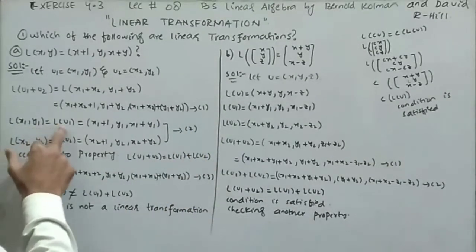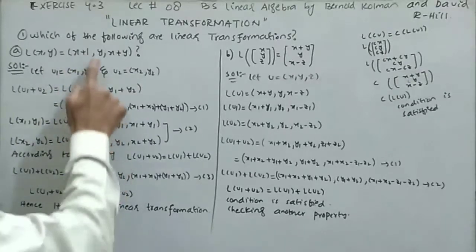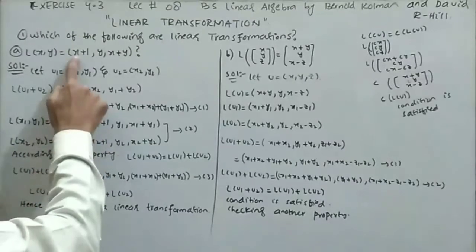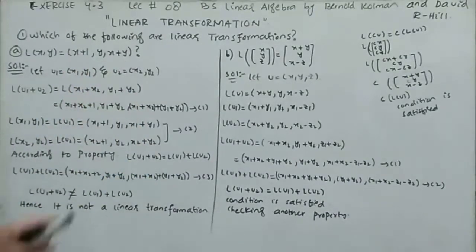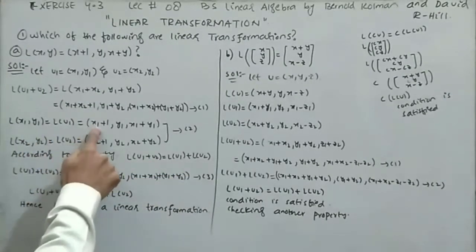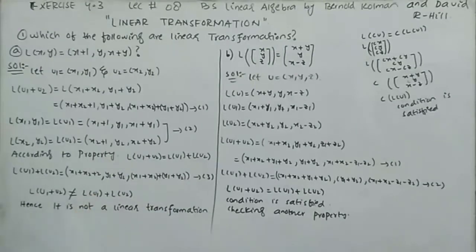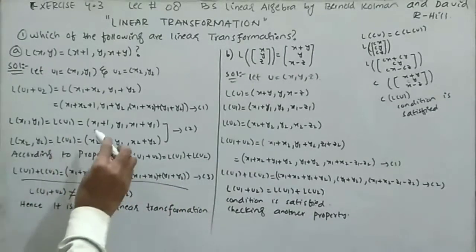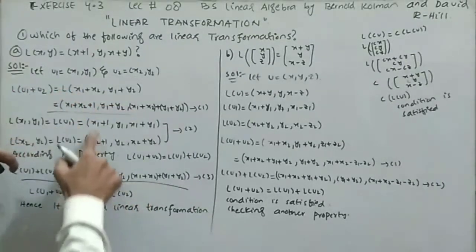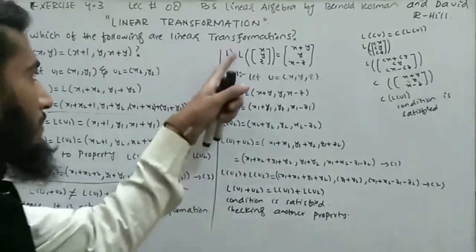Now L(x1, y1) = L(u1): replace x with x1, it becomes x1+1, y1, x1+y1. L(u2): x2+1, y2, x2+y2. So L(u1) + L(u2) gives us x1+x2+2, y1+y2, x1+x2+y1+y2. Comparing L(u1+u2) and L(u1)+L(u2): the first term x1+x2+2 versus x1+x2+1 are not the same. Therefore, this is not a linear transformation.